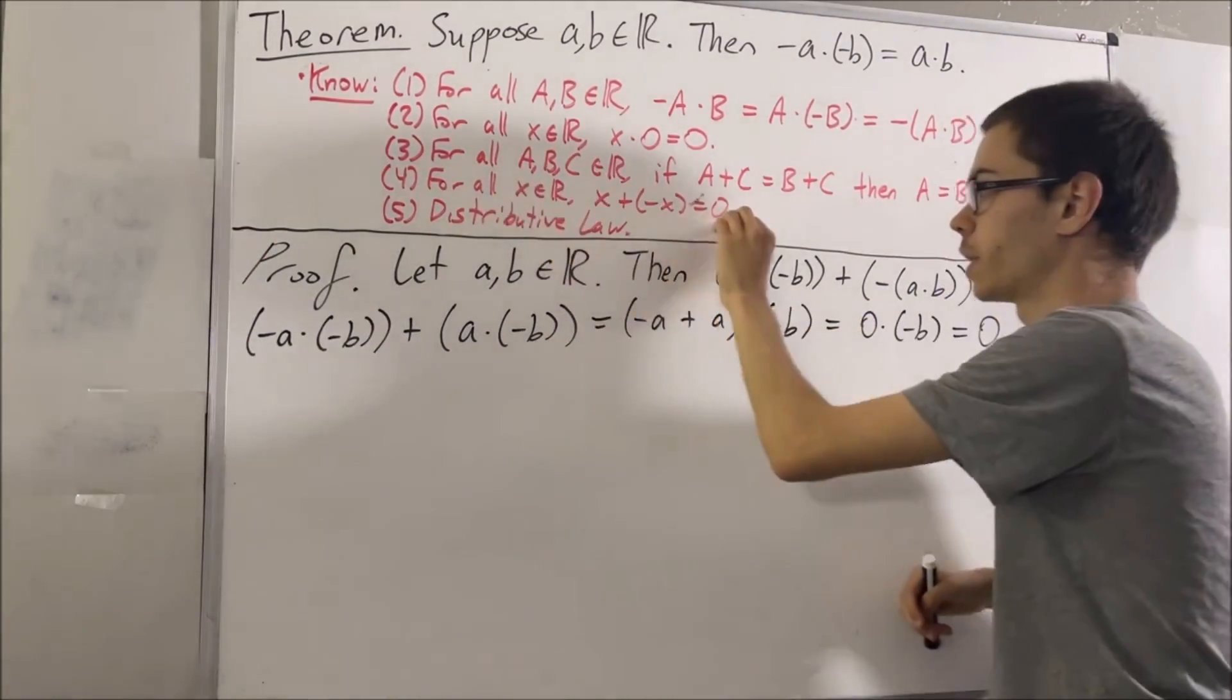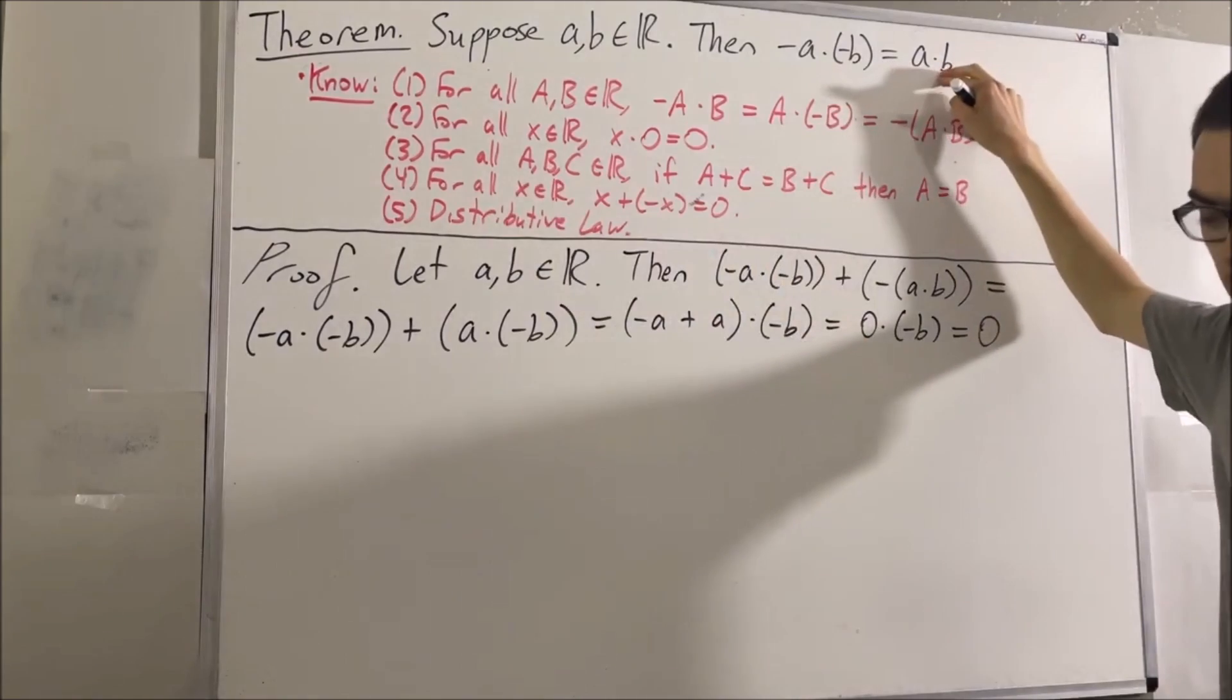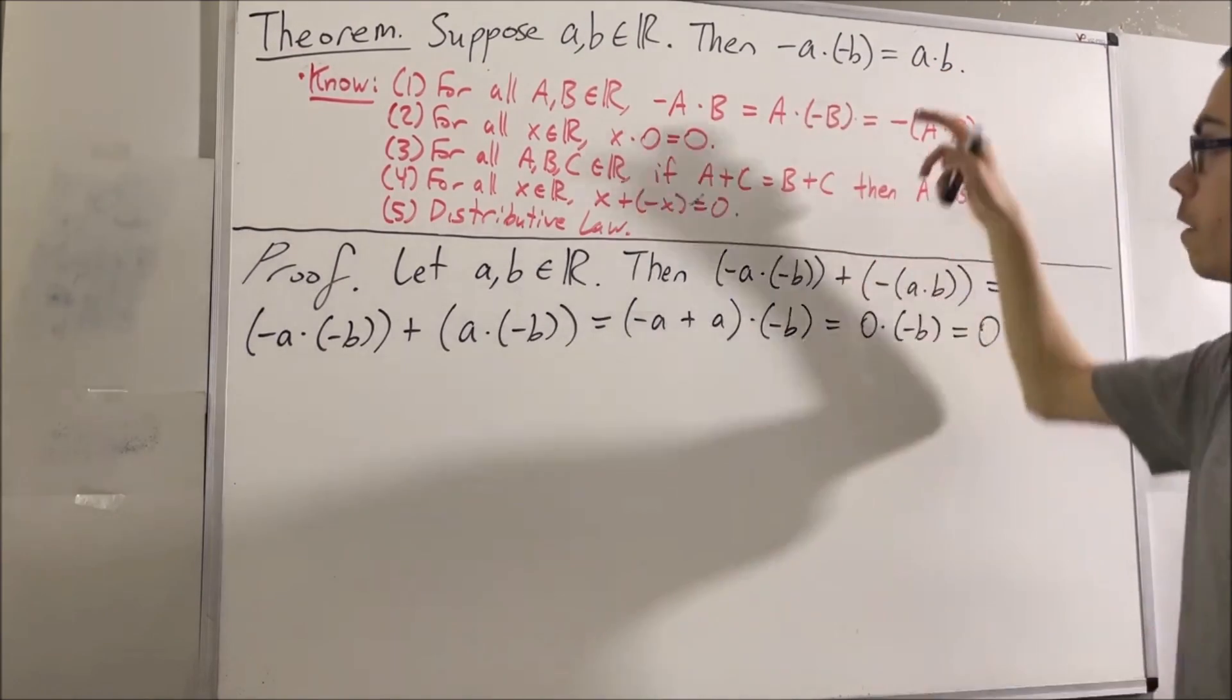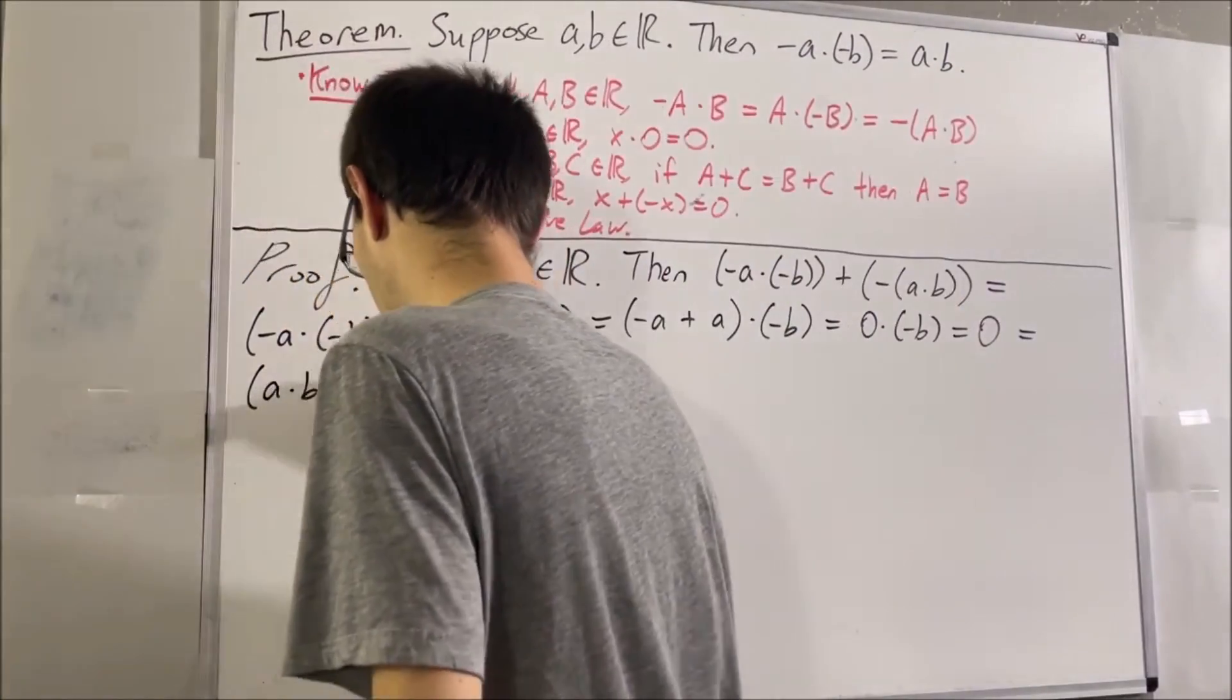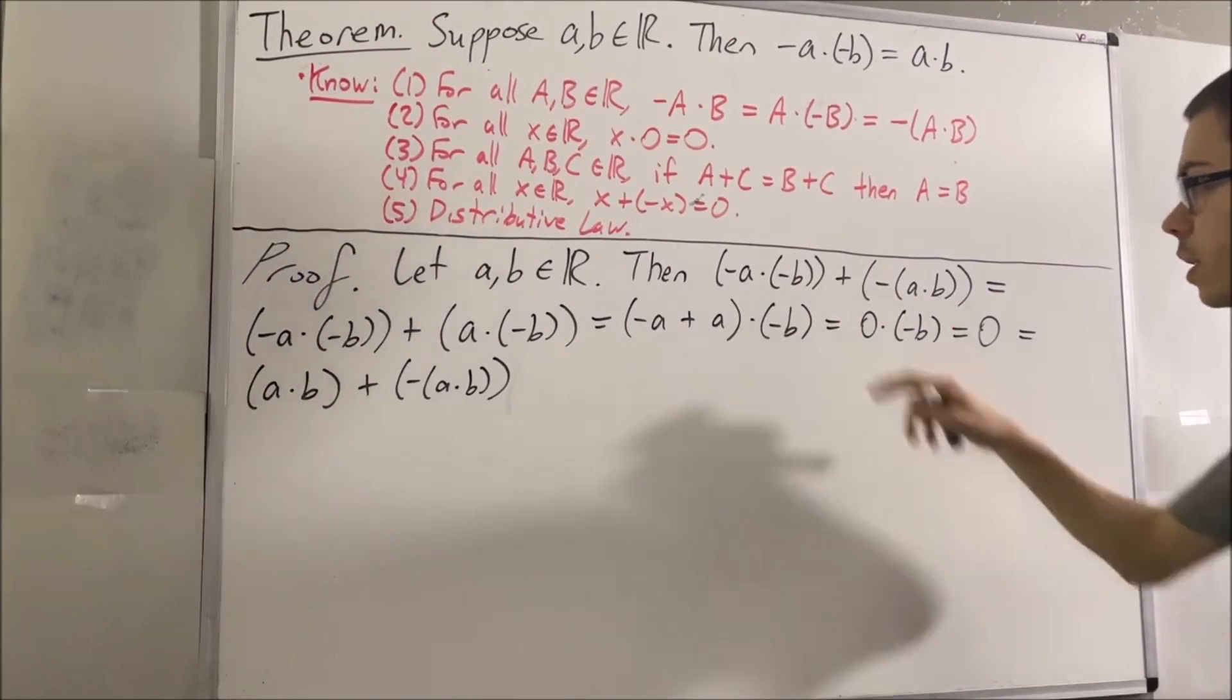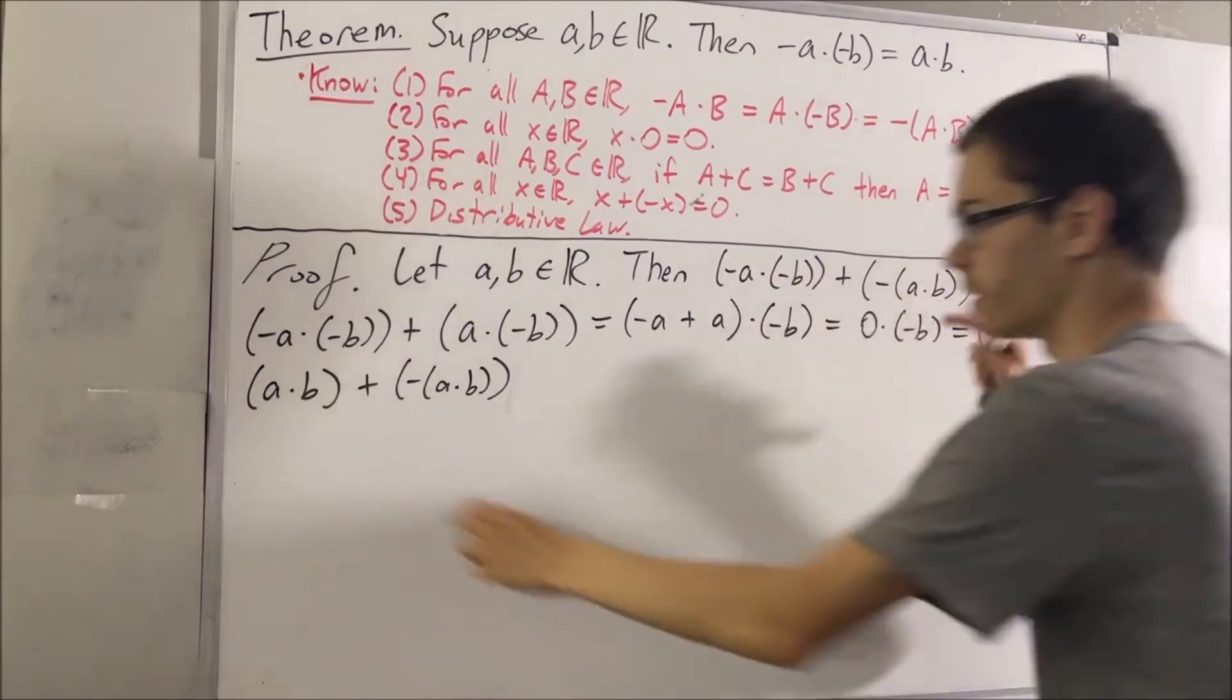But by fact number four again, A times B plus the negative of A times B is equal to zero. So really, this is equal to this.